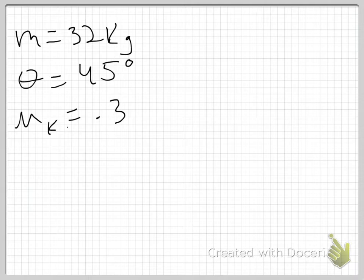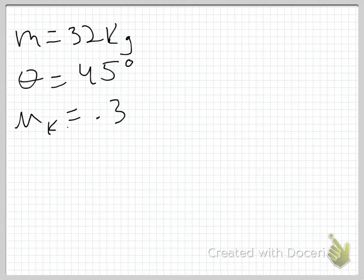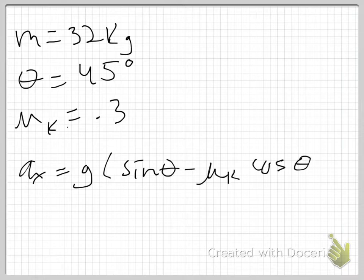Alright, so if I go back and look at this equation, let me just rewrite that. Ax is equal to g sine theta minus mu k cosine theta.